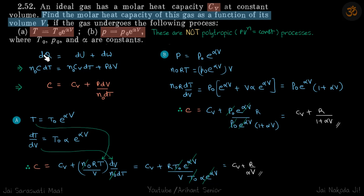So how do we find the molar heat capacity? We start with our basic formula energy conservation: dQ is equal to dU plus dW.